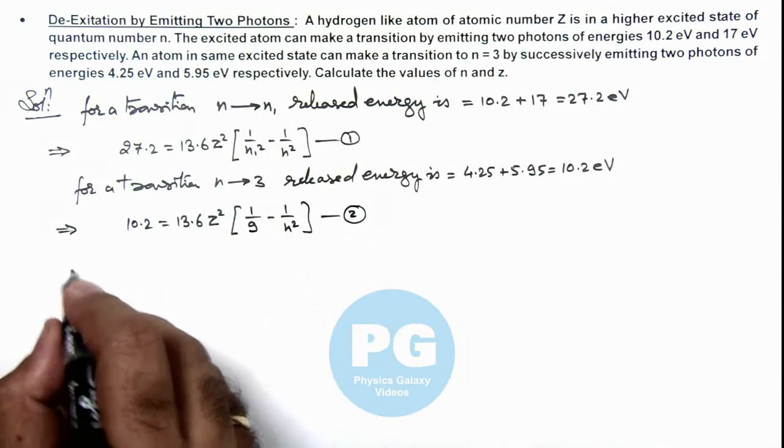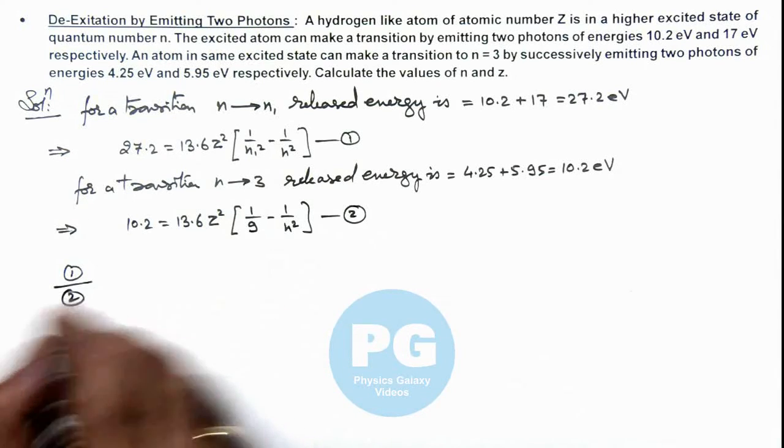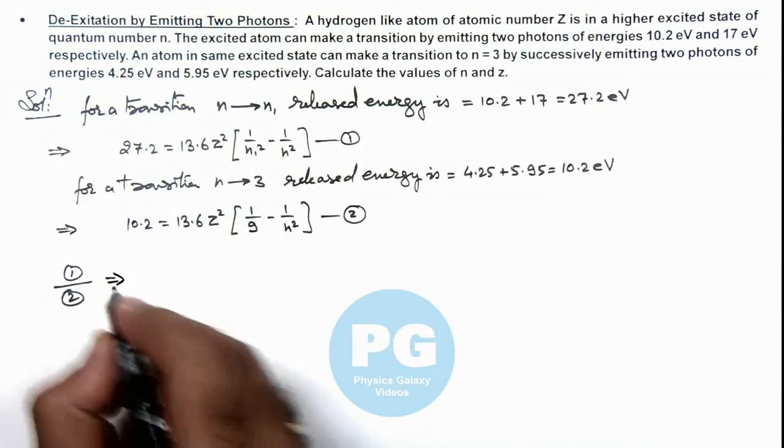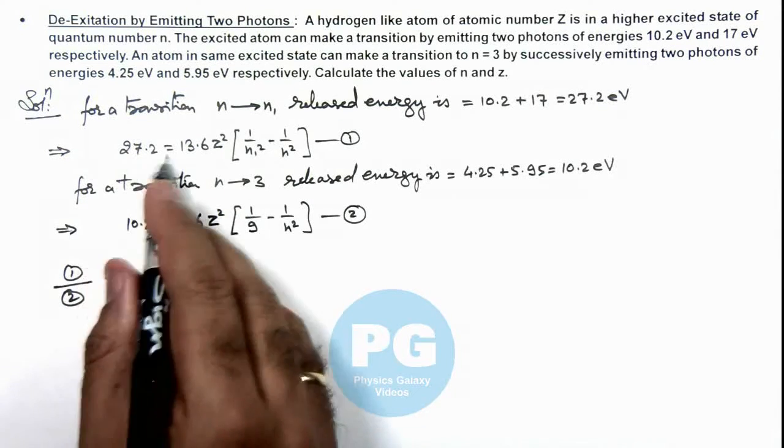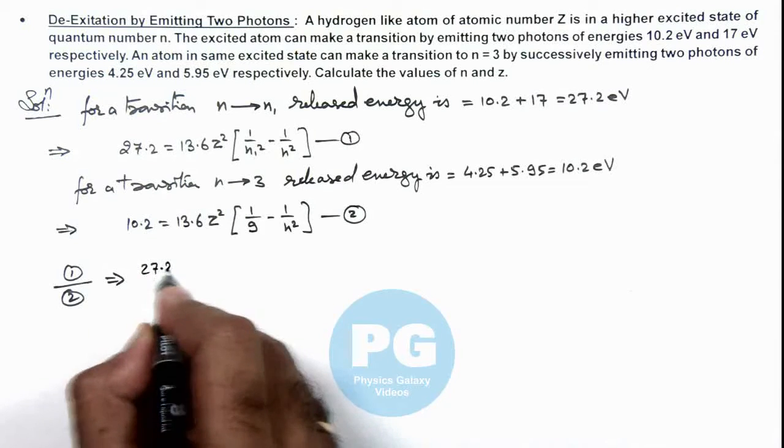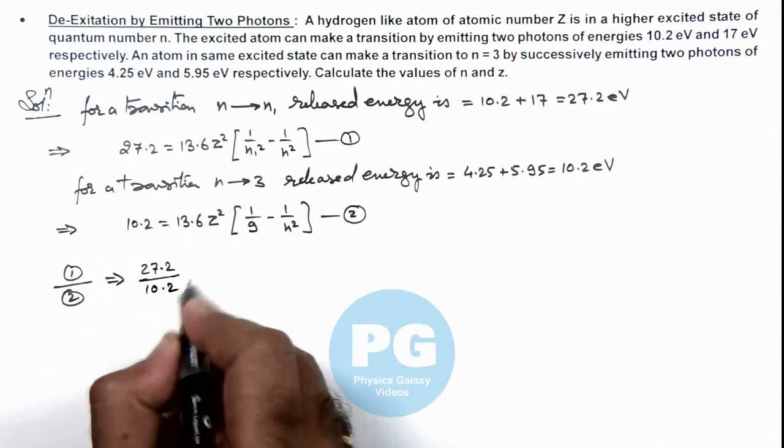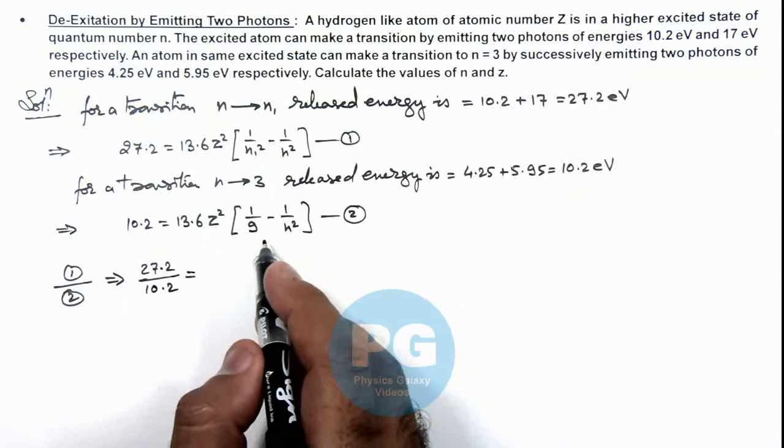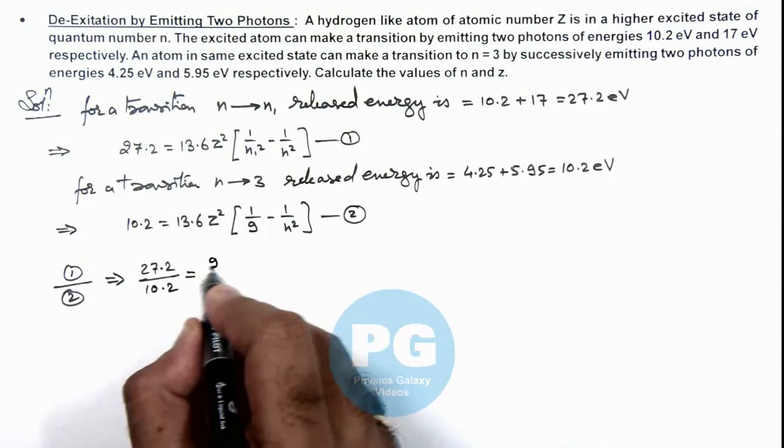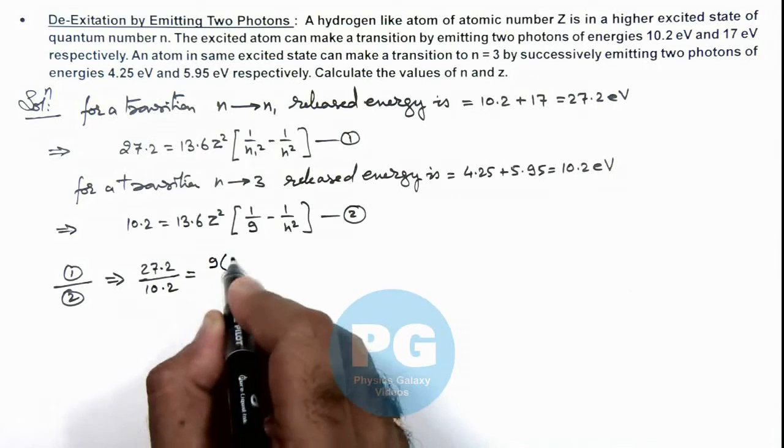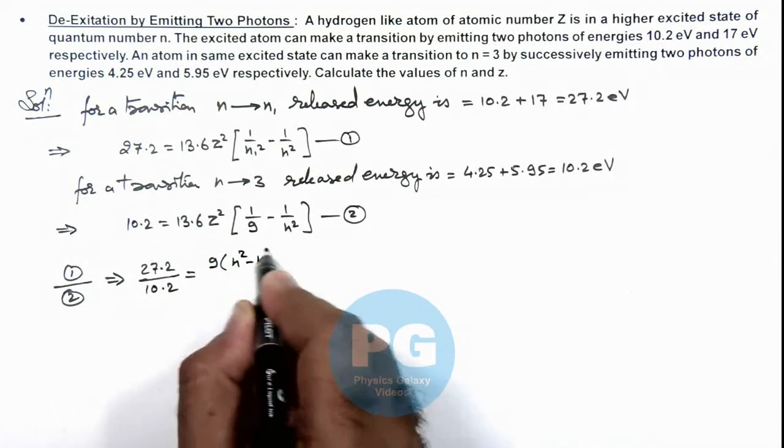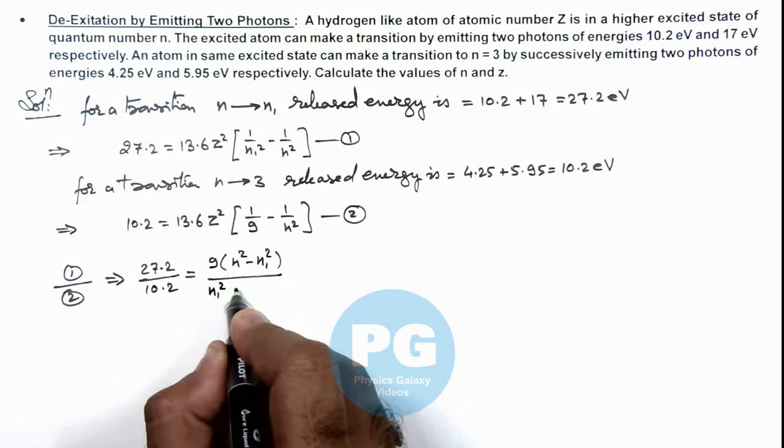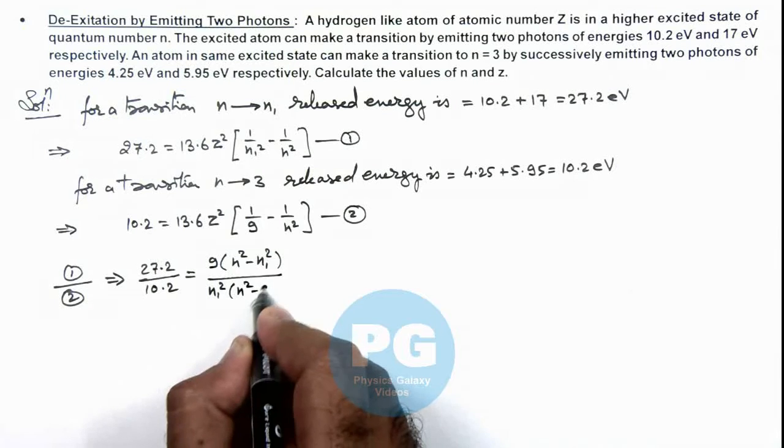Now here if we divide 2 by 1 and taking the ratio 1 by 2 it results, this will be 27.2 by 10.2 is equal to here 13.6 z square gets cancelled out, and taking the ratio of these term this gives 9 multiplied by n square minus n1 square divided by n1 square multiplied by n square minus 9.